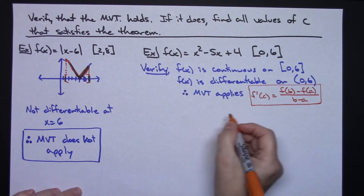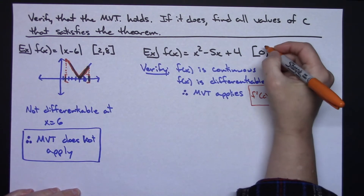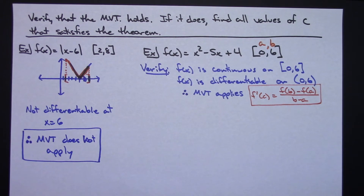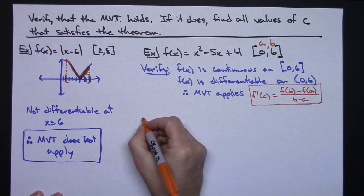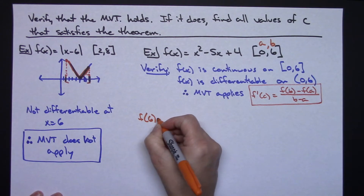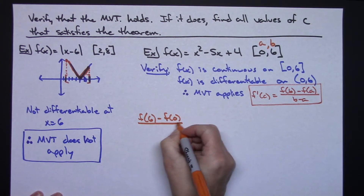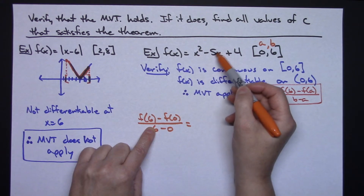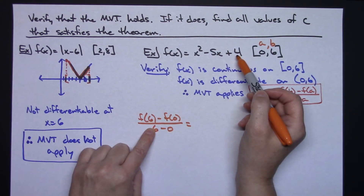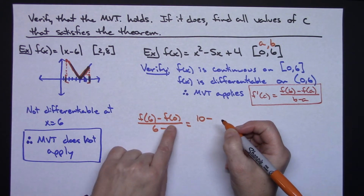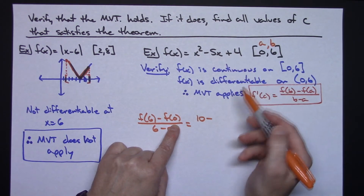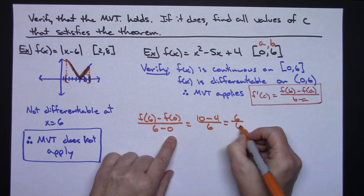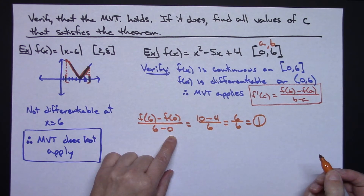Let's calculate the average rate of change. My interval is zero to six, so a equals zero and b equals six. I would have f of six minus f of zero all over six minus zero. F of six: plugging in six gives me 36 minus 30 plus 4, which is 10. Plugging in zero gives me zero minus zero plus 4, which is 4. So I have 10 minus 4 over 6, that's 6 over 6, which gives me 1. My average rate of change is 1.